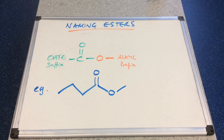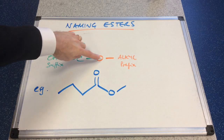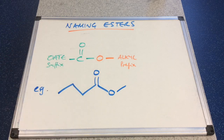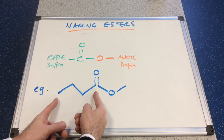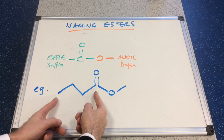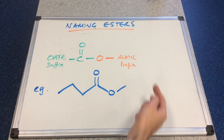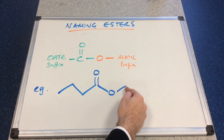So we'll just talk through the functional group first of all. We've got C double bond O and a single bond O — you can see that in the skeletal formula here. So we've got an oate part, which is this part here, and we've also got an alkyl part in the name, and that's the bit after the single bonded O.